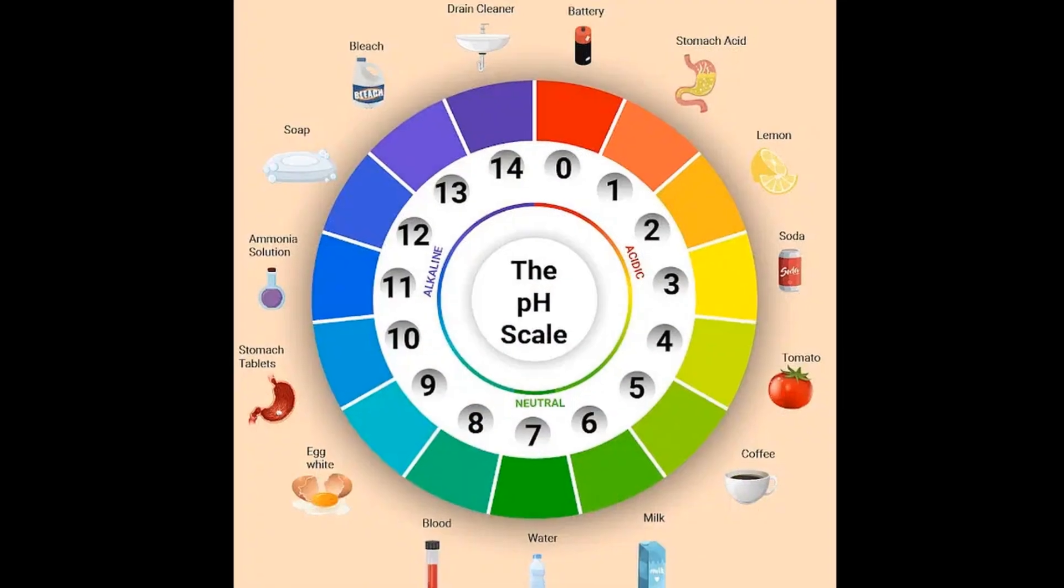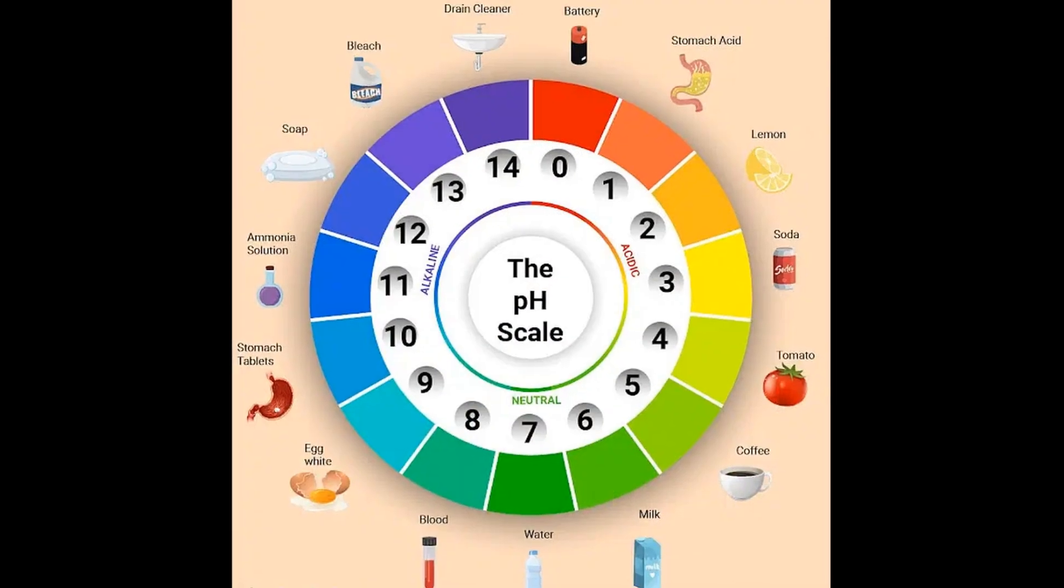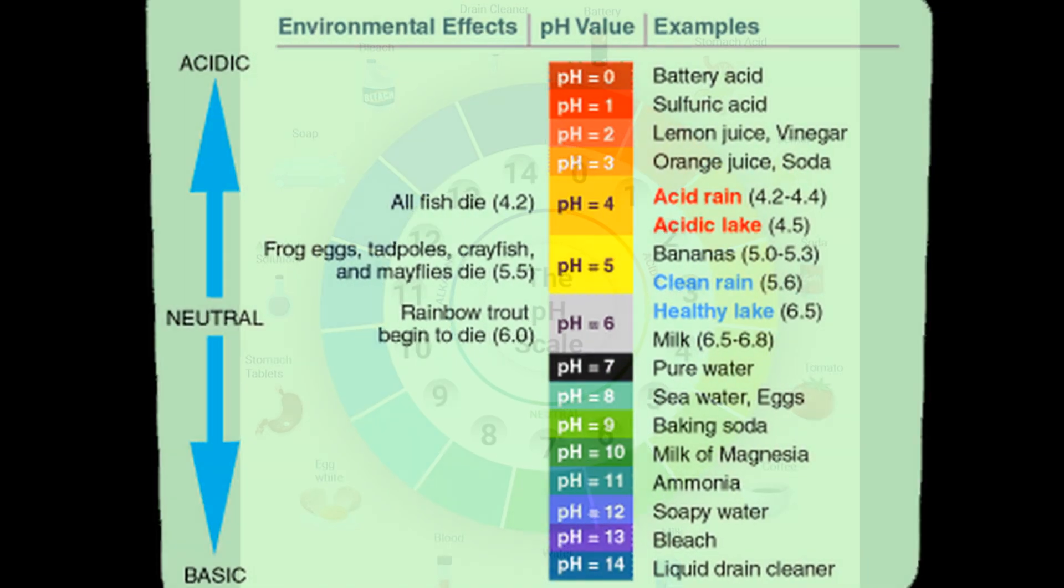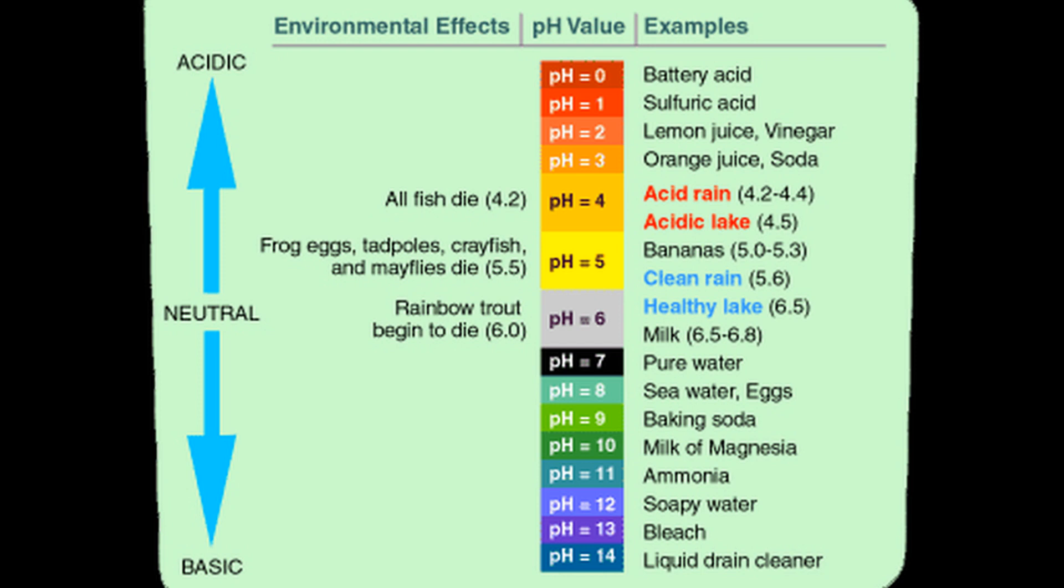Well, pH is a measure of how acidic or alkaline a substance is. A pH of 7 is considered neutral, while anything below 7 is acidic, and anything above 7 is alkaline.